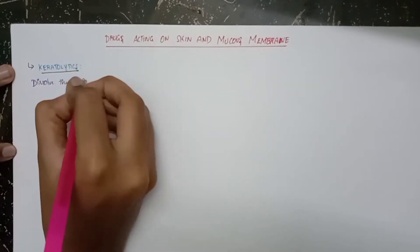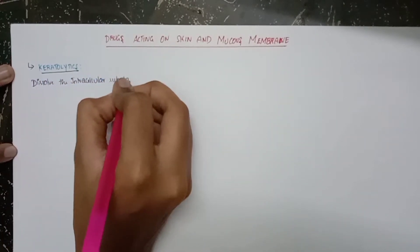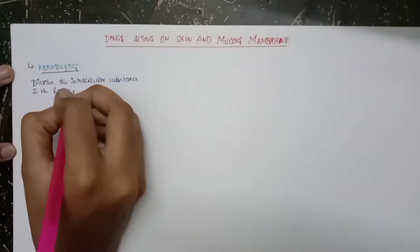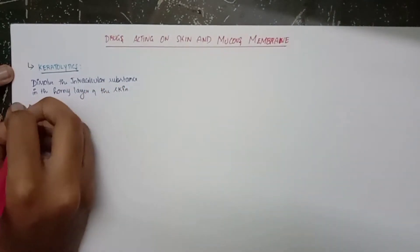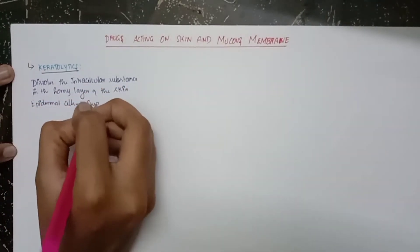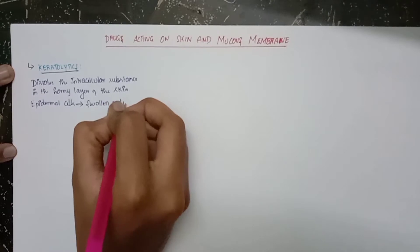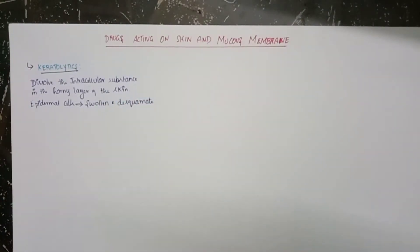The first group is catalyptics, that is a continuation. The catalyptics are substances that dissolve the intracellular substance in the horny layer of the skin. In this, the epidermal cells are swollen and desquamate.